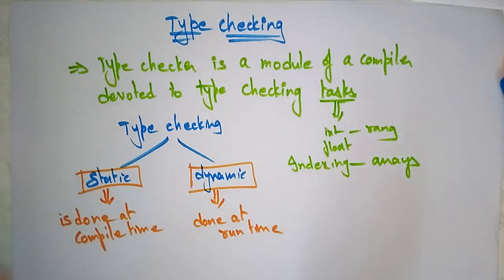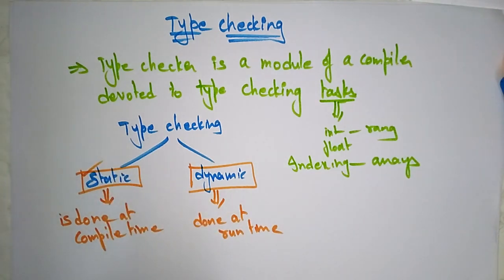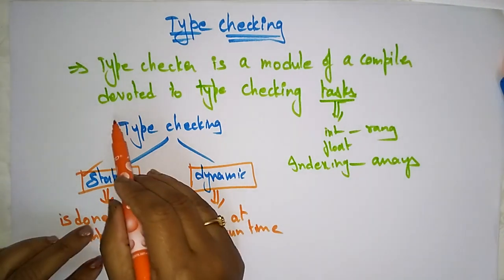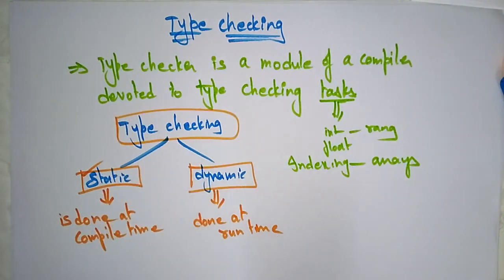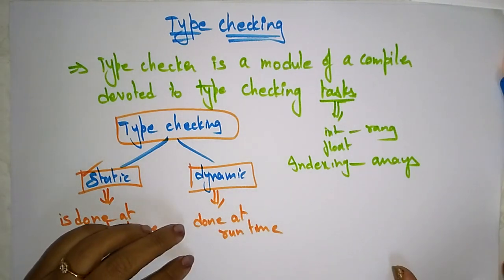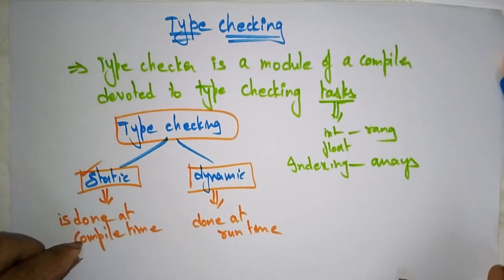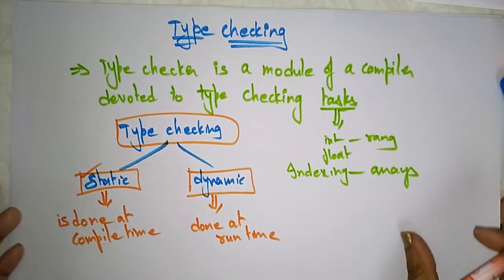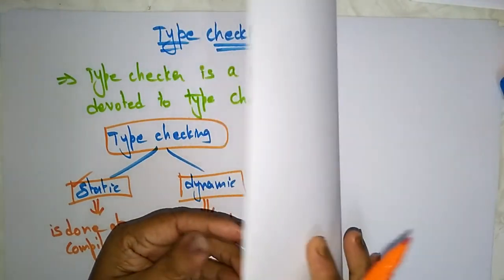For languages like Pascal and C, type checking is primarily static. In those languages, type checking is done at the static stage. Its main purpose is to check the correctness of the program before execution. Static type checking is also useful to determine the amount of memory needed to store the variables.